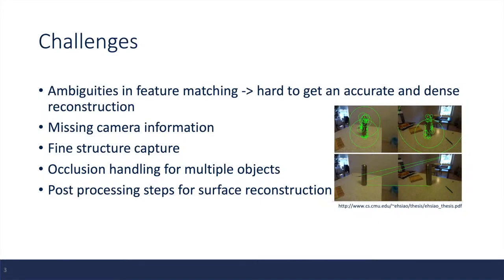Additionally, when we don't have camera parameters, the mapping problem becomes even harder. Also in many cases, the objects don't have many fine structures or have occlusions resulting from multiple objects. The algorithms need to properly handle the missing information in order to produce an accurate 3D reconstruction.